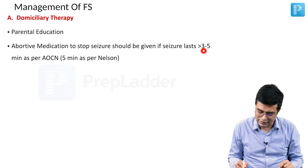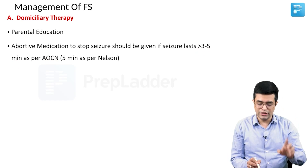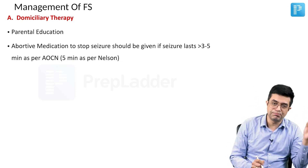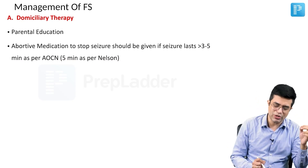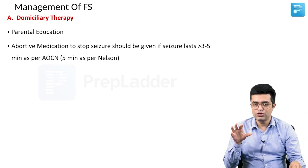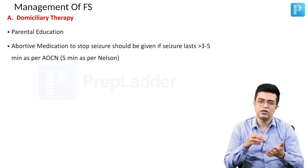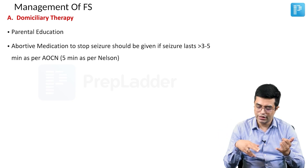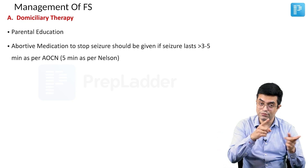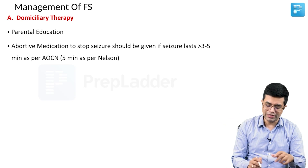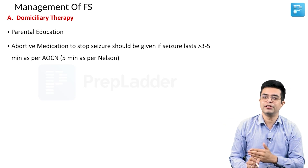According to AOCN, give medication if the seizure lasts more than 3 to 5 minutes. According to Nelson as well as Swyman, the threshold is 5 minutes. In PG entrance exams, JIPMER asked about the minimum time to wait before giving benzodiazepine to abort a febrile seizure. The best answer is 5 minutes, because AOCN gives a range of 3 to 5 minutes and Nelson and Swyman both give a value of 5 minutes.